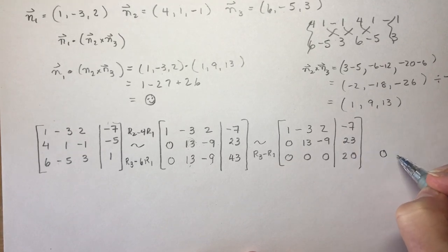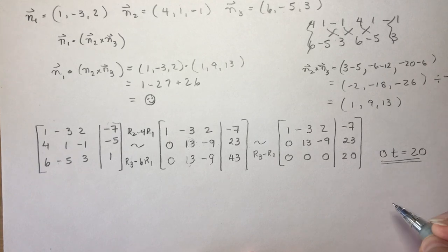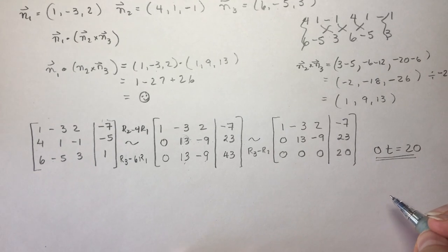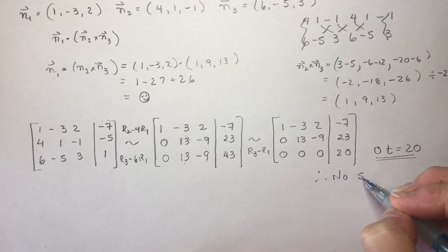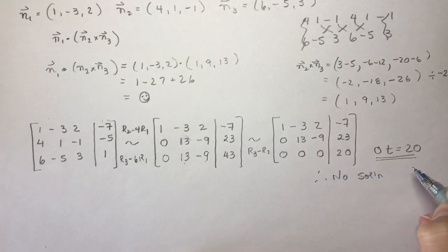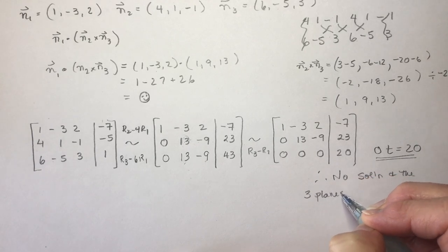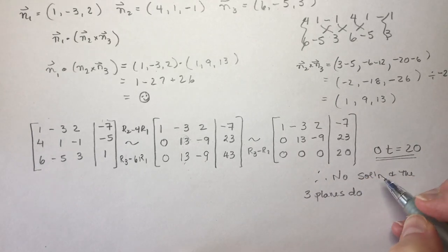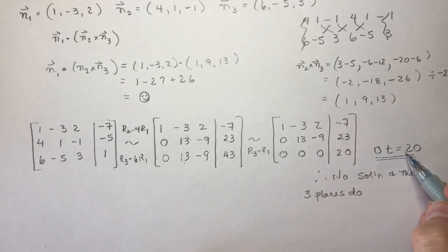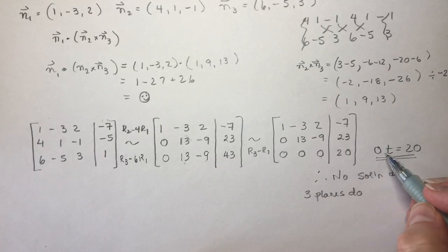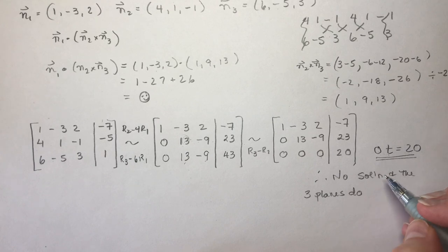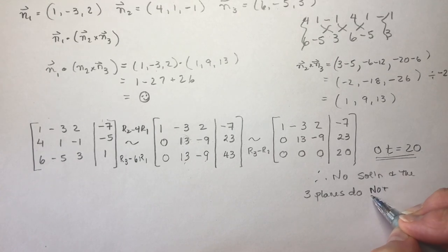So, that means that 0 times t is equal to 20. And you should know right away that means no solution. So, the planes, the three planes, do not intersect. The three planes do not intersect. Not as a line. If this was a line, then I would have, I would have to have, I could have 3t equals 0, but I can't have 0t equals something because you can't divide by 0. Three planes do not intersect.